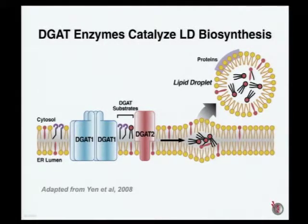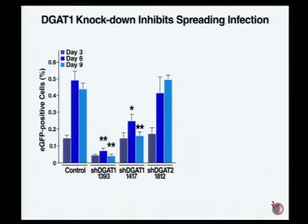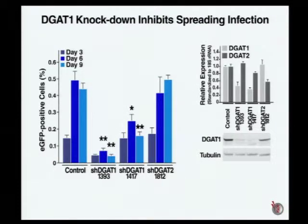To find out whether the DGAT enzymes are important for HCV infection, we performed a very straightforward approach — we knocked them both down with shRNA in the HUH7.5 hepatoma cell line, which is the only cell line that actually supports HCV replication in cell culture. We found that knockdown of DGAT-1 really inhibited the spread of viral infection in these cultures, while knockdown of DGAT-2 had no effect. Knockdown was confirmed at the RNA level, and also at the protein level for DGAT-1, though we cannot show it for DGAT-2 because we don't have a good antibody at this point.